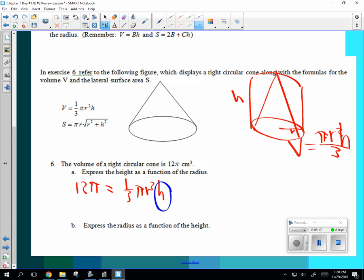So I'm going to multiply by three. So I'm going to go 12 pi times three divided by pi R squared equals H. And you can cancel pi. So it's going to get, I get H is 36 over R squared. Did anybody else get that? Good. That's good.